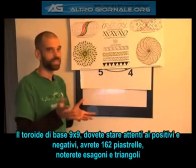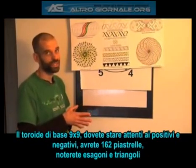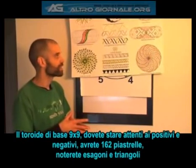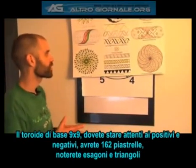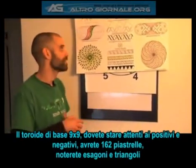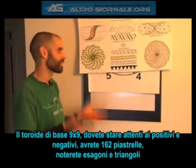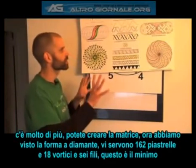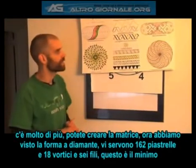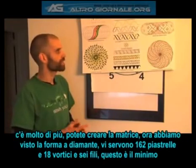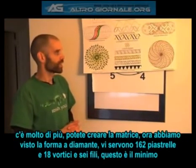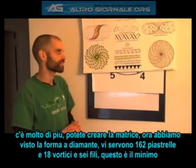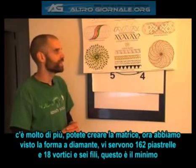You have to be really thorough when doing this. The common mistake with your basic nine by nine toroid is that you don't account for all your positives and negatives. In a basic nine by nine toroid you're going to have 162 tiles. We didn't even get into how you can turn them into hexagons and triangles — there's a lot more there and how you can create the matrix. We've only really looked at the diamonds, but you need 162 tiles with 18 vortices and six conductors. That's the minimum you can have.